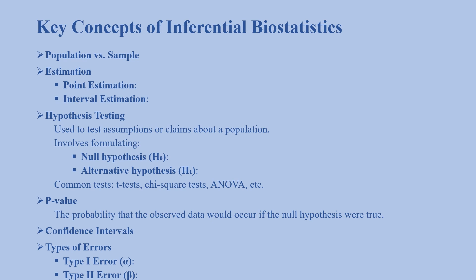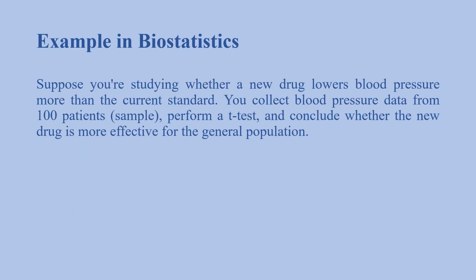The next concept is types of errors. There are two types: Type I error (denoted by alpha) is rejecting H₀ when it's actually true—a false positive. Type II error (denoted by beta) is not rejecting H₀ when it's false—a false negative.